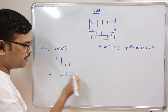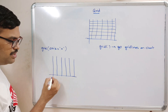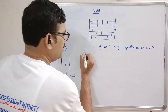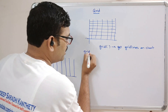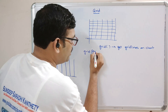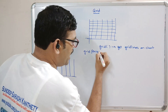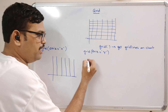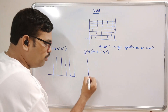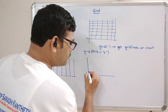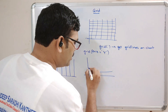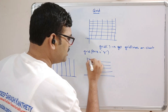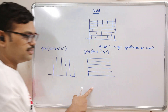If the grid function has the parameter axis with y, then only the y-axis will have the grid lines, so the chart will look like this.